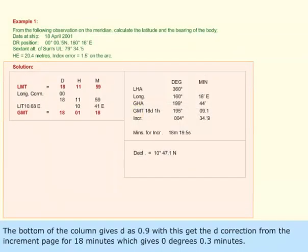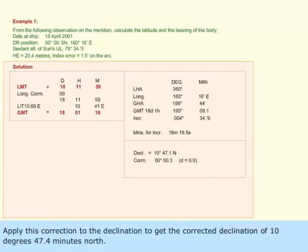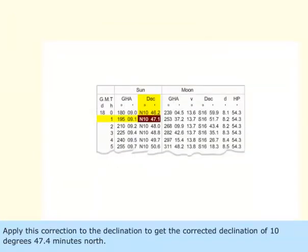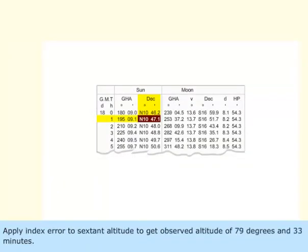With this, get the D correction from increment page of 18 minutes, which gives 0 degrees 0.3 minutes. Apply this correction to the declination to get the corrected declination of 10 degrees 47.4 minutes north.